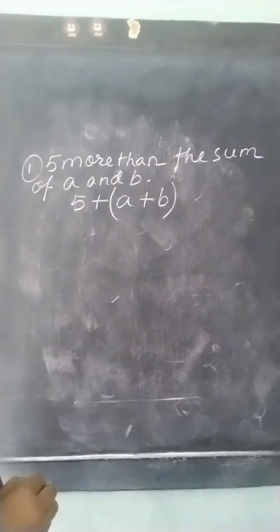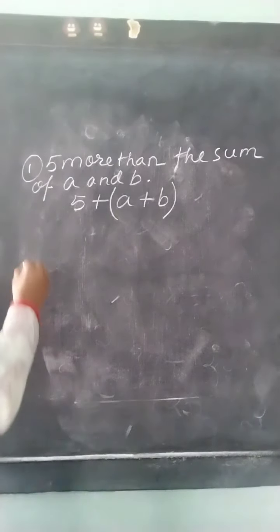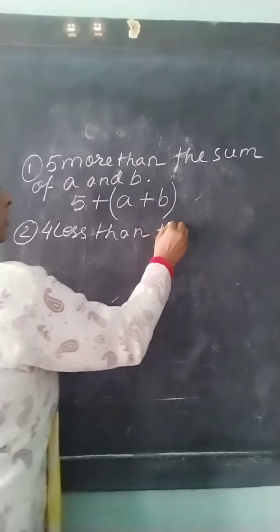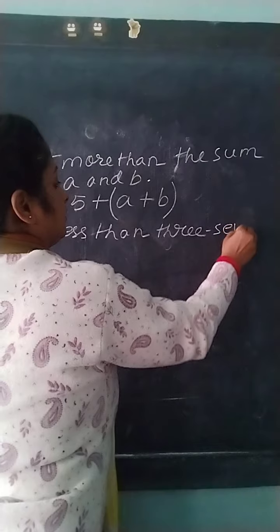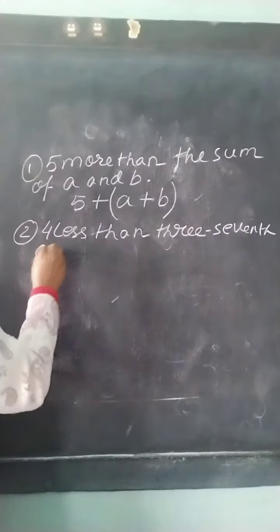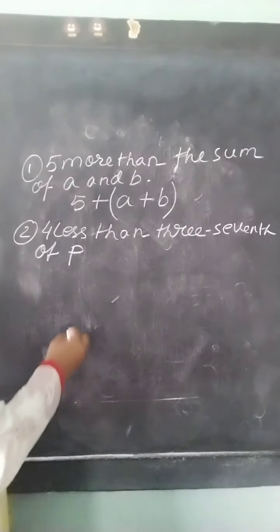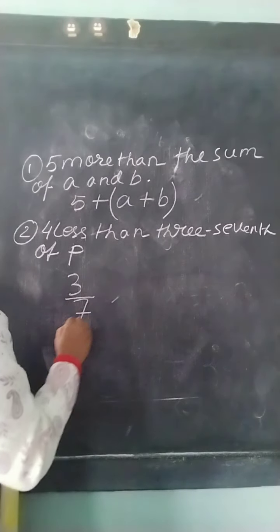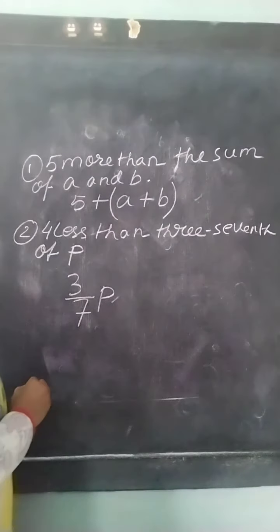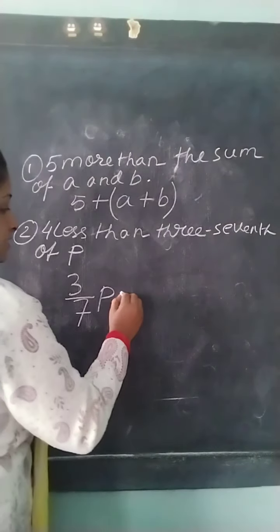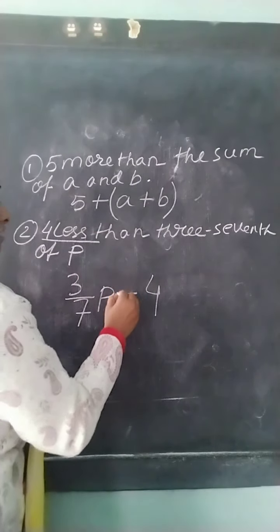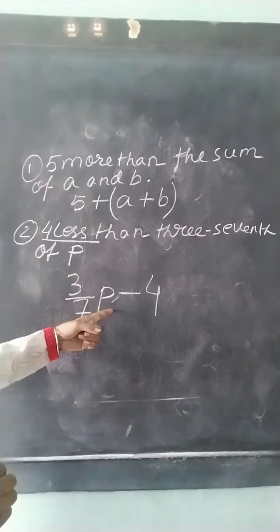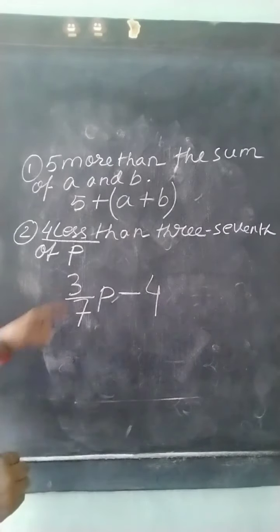Next sum: 4 less than 3/7 of P. 3/7 of P means 3 by 7 into P, that is 3P by 7. And 4 less than that means minus 4. So 4 should be subtracted from 3/7 of P, giving us 3P/7 minus 4. This is how the algebraic variable will be represented through a symbol.